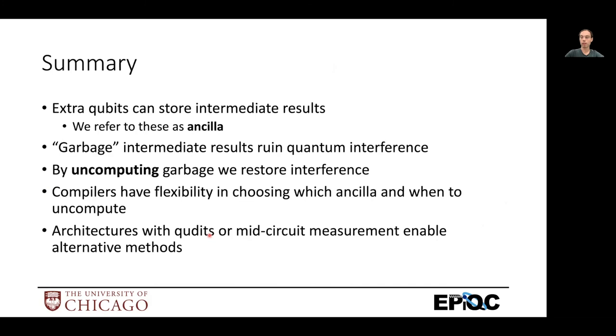Okay, so in summary, we learned about Ancilla, which was used to store intermediate results for computation. We learned that the garbage values stored on these Ancilla can ruin quantum interference and make our algorithms not work. But we can uncompute this garbage to restore our interference effects. And compilers have a lot of flexibility in when and how we do this uncomputing and which Ancilla we give to any of our sub-circuits. And we also still have the flexibility of which of these sub-circuits we even choose when we decompose.